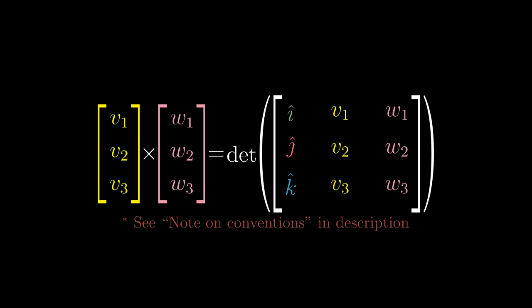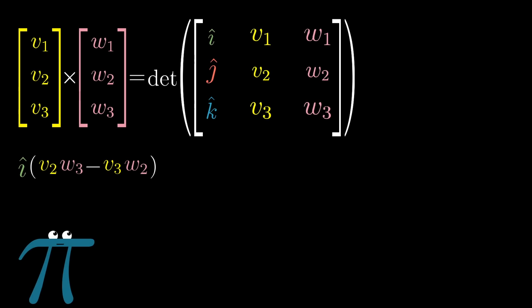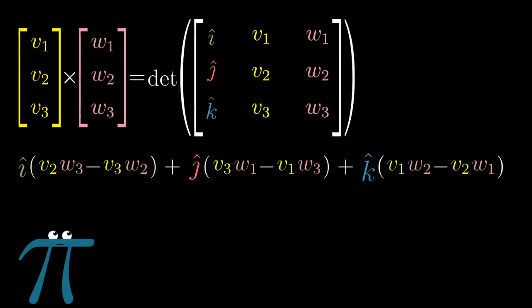The silliness is probably clear here. What on earth does it mean to put in a vector as the entry of a matrix? Students are often told that this is just a notational trick. When you carry out the computations as if i hat, j hat, and k hat were numbers, then you get some linear combination of those basis vectors.